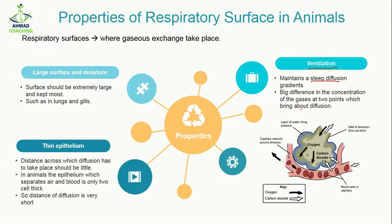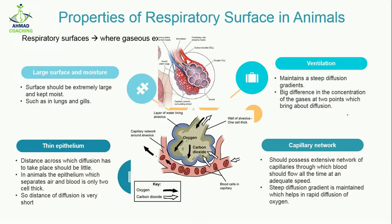For example, in gaseous exchange at the alveoli of the lungs, the blood has a large amount of carbon dioxide while the air we breathe in has a large concentration of oxygen. Because of this concentration gradient, the exchange of gases takes place — oxygen enters the blood while carbon dioxide is breathed out.